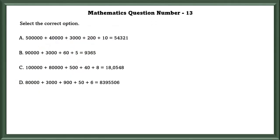Mathematics Question No. 13: Select the correct option. A is the wrong option because the correct answer is 5,43,210. B is also the wrong answer. It is 93,065. D is also wrong. The correct answer is 83,956.